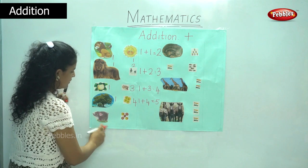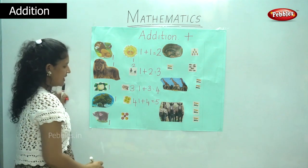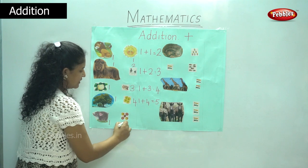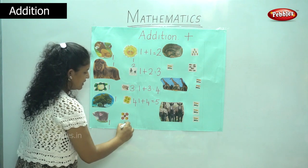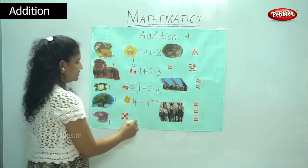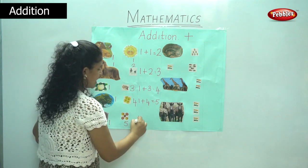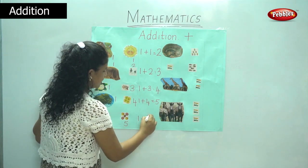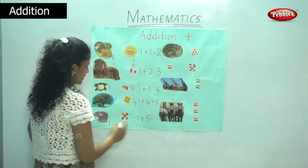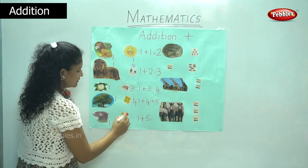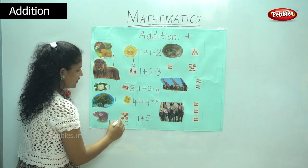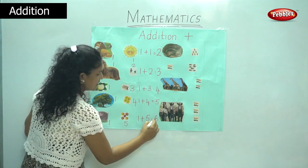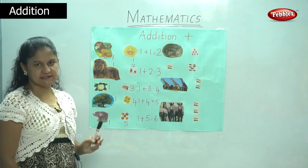Next I have one elephant and five apples. So we count one plus five is equal to one, two, three, four, five, six. So one plus five is equal to six.